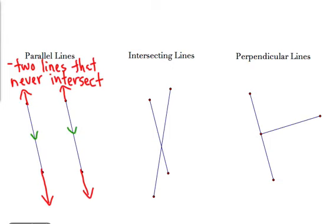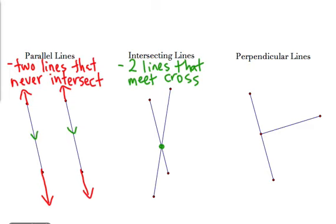Intersecting lines are just two lines that meet or cross. Nothing special — they just hit each other. You notice these two line segments are meeting right there and then continue on their merry way. It's impossible for lines to intersect more than once because lines are straight by definition, so they can't curve back around and hit again.